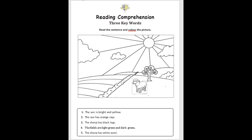Sentence number three: the sheep has black legs. Wow. The sheep has black legs. Yes. So you are going to bring your black color and color only the legs. Okay.